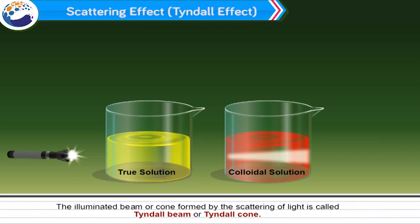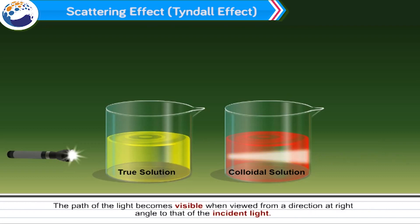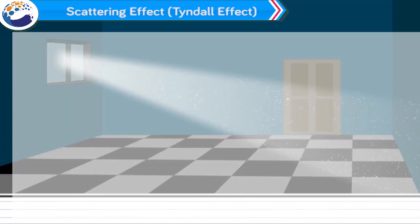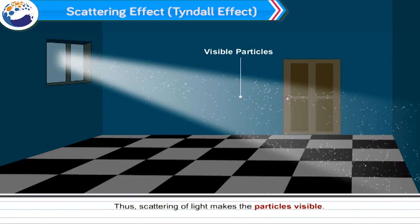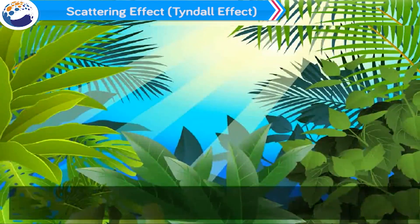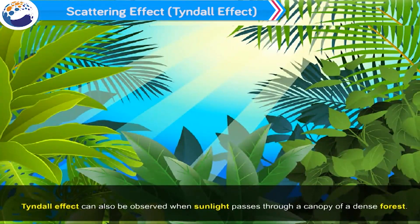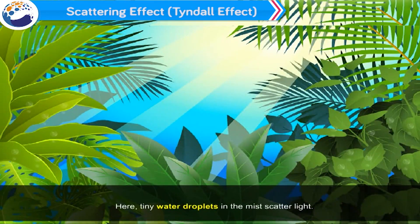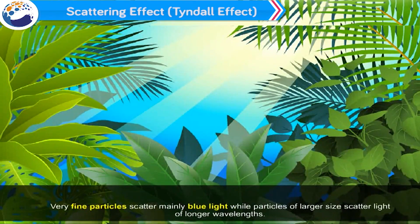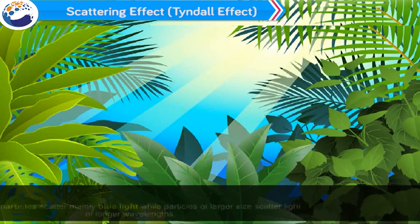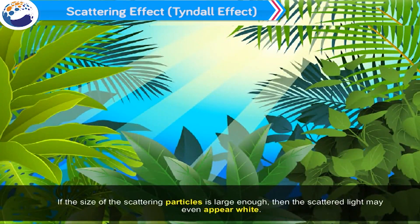The illuminated beam or cone formed by scattering of light is called the Tyndall beam or Tyndall cone. The path of light becomes visible when viewed from a direction at right angles to that of the incident light. This phenomenon is seen when a fine beam of sunlight enters a smoke-filled room through a small hole. The Tyndall effect can also be observed when sunlight passes through the canopy of a dense forest, where tiny water droplets in the mist scatter light. The color of scattered light depends on the size of the scattering particles: very fine particles scatter mainly blue light, while particles of larger size scatter light of longer wavelengths. If the scattering particles are large enough, the scattered light may even appear white.